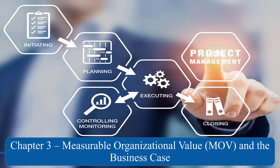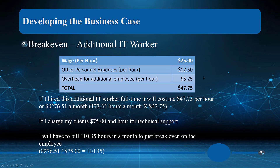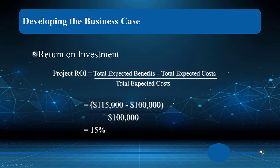Welcome back to Chapter 3, Part 4: Measurable Organizational Value (MOV) and the business case. We looked at a business case for hiring an additional IT worker — in order to break even on this employee, I needed to bill 110.3 hours based on my calculations. We also talked about alternatives like hiring a part-time person or allowing existing employees to work overtime.